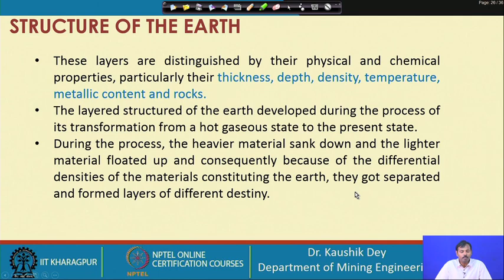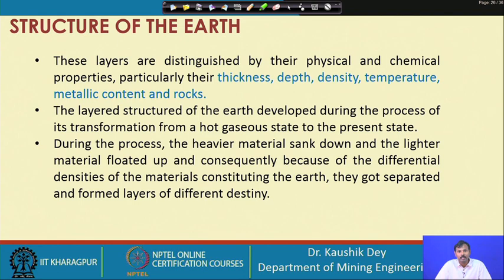These layers are distinguished by their physical and chemical properties — particularly thickness, depth, density, temperature, metallic content, and rock type. When an earthquake occurs, shock waves travel through these layers, giving us indicative knowledge about them. The layer structure of the earth developed during its transformation from a hot gaseous state to the present state, where heavier materials sank and lighter materials floated, creating differential densities.